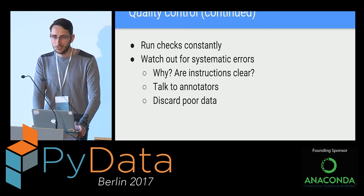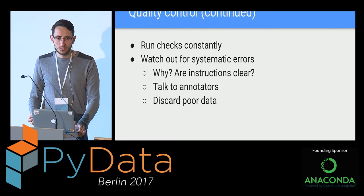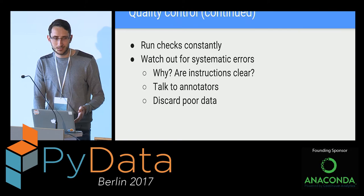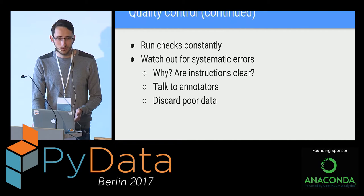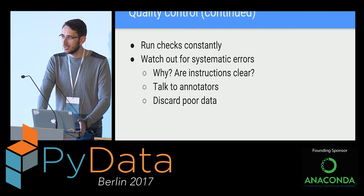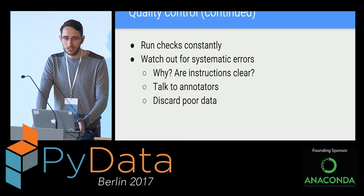You probably want to be running quality controls continuously — ideally after every little micro-task the human does. Watch for random errors; sometimes people misclick, which isn't too big a problem. But if they're systematically making the same mistakes, look at your own instructions, because if multiple people consistently make the same error, that's probably something to do with what you've asked them to do. It helps to be in the same room so you can talk to them and work out why they're making that mistake. And if they're making mistakes all the time, you should throw away the data and start from scratch — it's garbage and won't do you any good downstream.